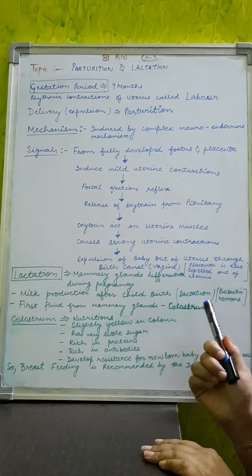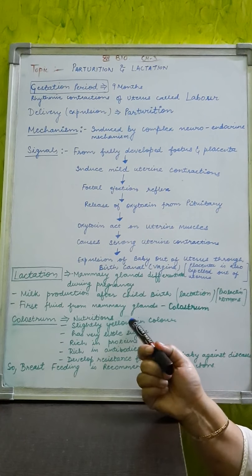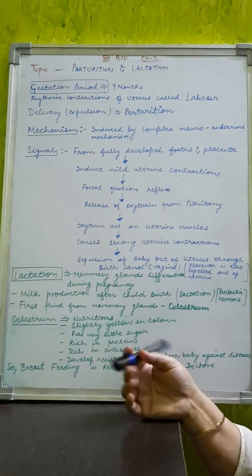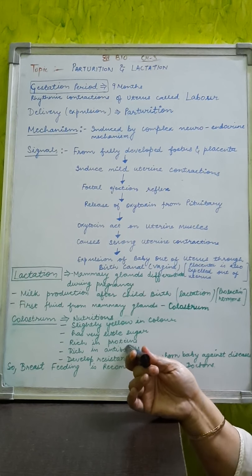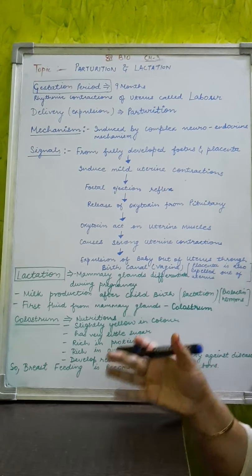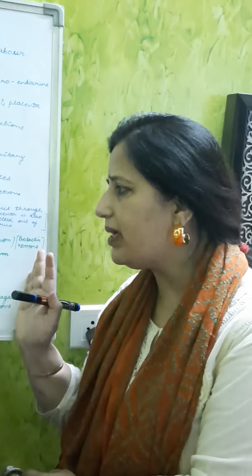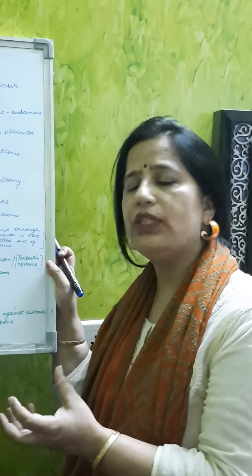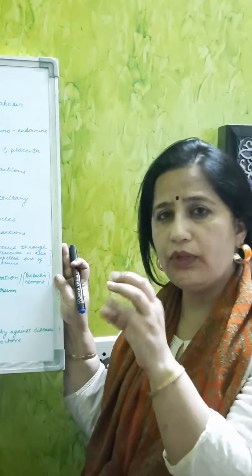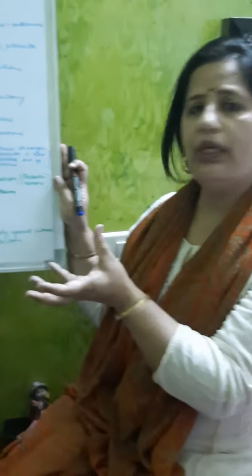Doctors recommend, health centers recommend, because it is nutritious, very much nutritious, slightly yellowish color, and it is rich in proteins, antibodies, but sugar levels are very small. And this is the most important, because these antibodies help the child to protect from different diseases, they make the child resistant. So colostrum is yellowish fluid released after the birth of the child, the first milk produced by the mother's body, and how it is helpful? Because it is very much nutritious, sugar amount is low, rich in antibodies and the child becomes resistant to different diseases.